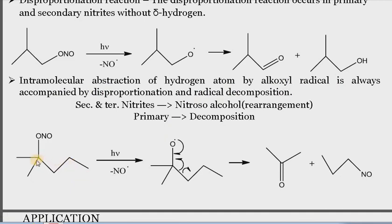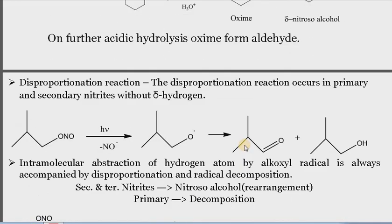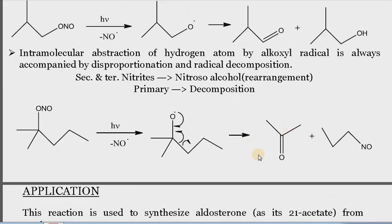Intramolecular abstraction of hydrogen atom by an alkoxyl radical is always accompanied by disproportionation and radical decomposition. This particular reactant does not have a delta hydrogen, so disproportionation will take place in case of secondary and tertiary nitrites. In the case of a tertiary nitrite, the nitroso-alcohol rearranges, and in the case of primary nitrites, decomposition takes place to form a nitroso compound and a carbonyl compound.